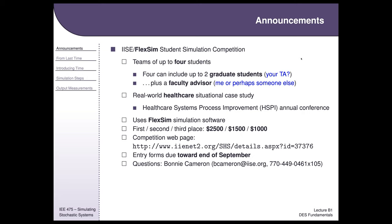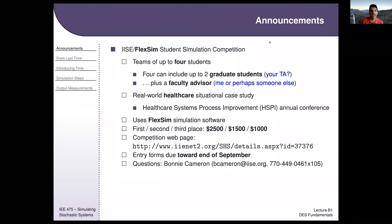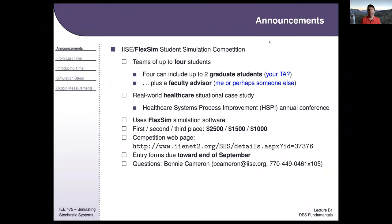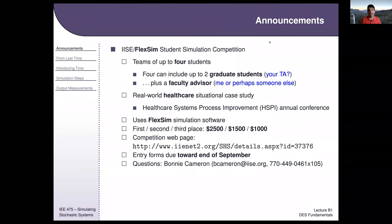A student asked: can we work with other people in the class on one of these competitions and still submit it as our final project? The professor confirmed: final projects are already group projects, so you can form a team. If there are four people in the class who want to get together and submit this as your final project, that's fine. He would prefer keeping teams within the class to avoid issues with outside assistance.